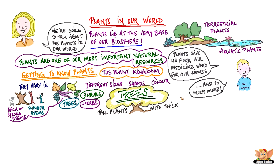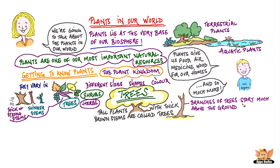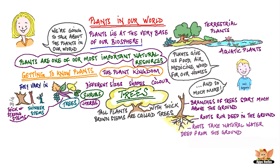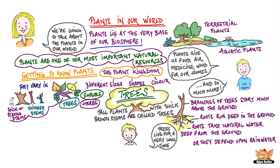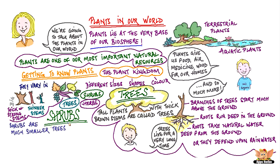Tall plants with thick brown stems are called trees. Observe some trees around you — most of them are very big, and the branches of most trees start much above the ground. Trees have roots that run deep in the ground, so most trees do not need watering. Their roots take natural water from deep in the ground, or they depend on rainwater. Trees live for a very, very long time.